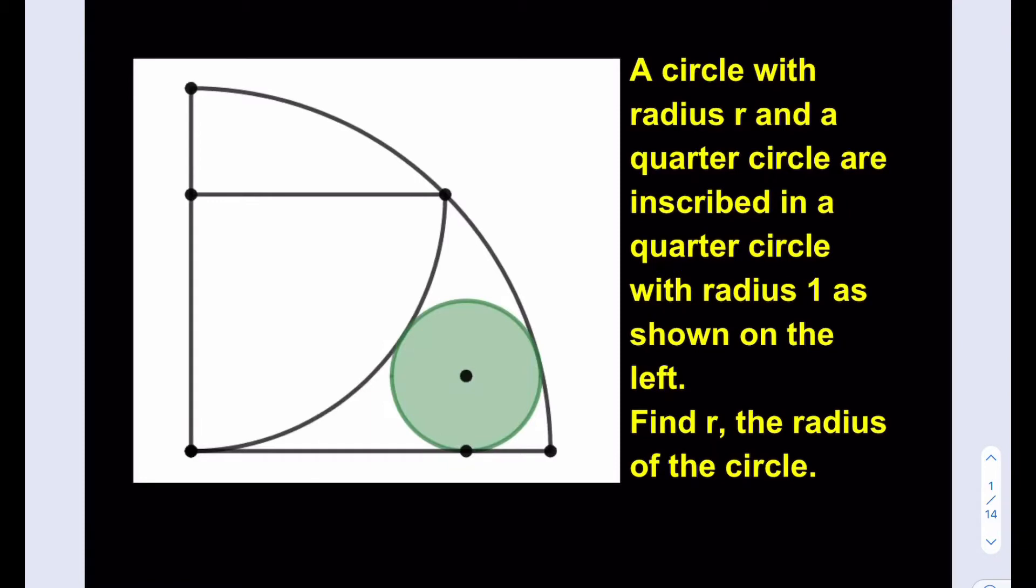Now the only thing we know here is that the radius of the larger quarter circle is 1 and we've got to find the radius of the circle, which is r. So let's go ahead and find the radius of the smaller quarter circle first because we're going to need that in our calculations.